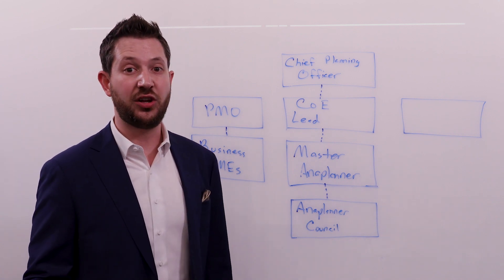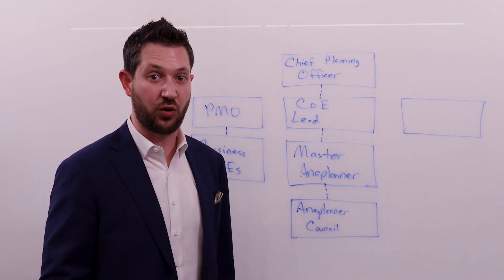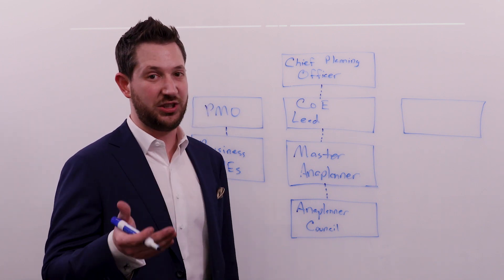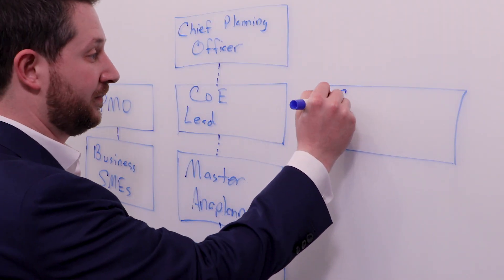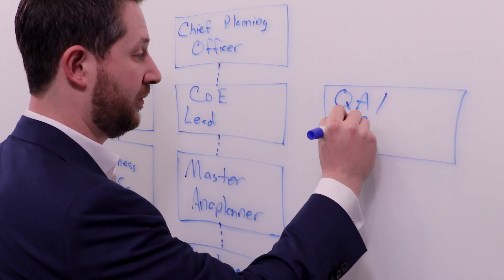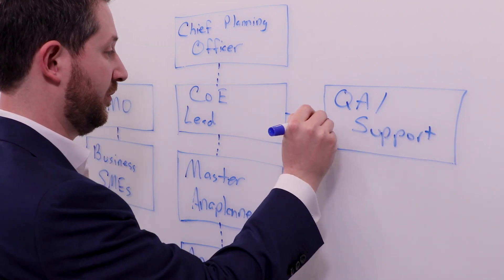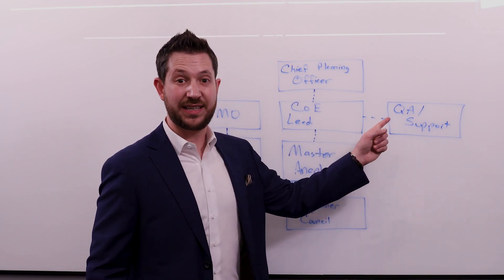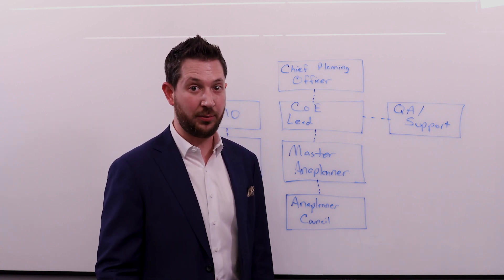And then along the lines of those implementations, you need a QA team to make sure that what you're building actually supports the business processes that your business subject matter experts asked for. Your QA team is going to help you during your implementation to make sure that you have a successful model build.